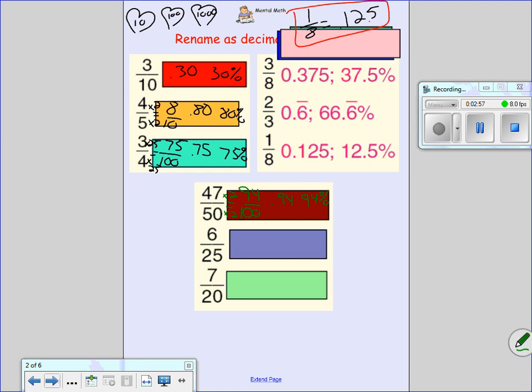6 over 25, we can move this one into 10, 100, or 1,000. I'm going to change colors here. 25 goes into 100. We're going times 4. Times 4 gives me 24, which would be 0.24, which would be 24 percent.